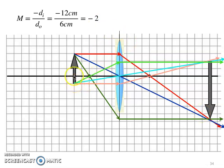And 2 means our image should be twice the size of our object. Our object has a height of 1, 2, 3, 4. Our image has a height of 1, 2, 3, 4, 5, 6, 7, 8.